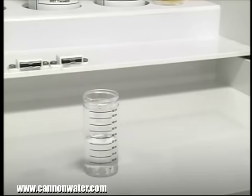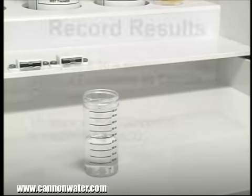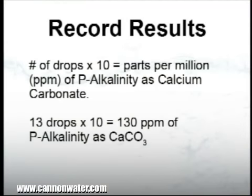According to the endpoint ID procedure, the titration is complete when the sample changes from pink to colorless. In this example, each drop was equivalent to 10 parts per million of alkalinity. The sample took 13 drops to reach the endpoint. Therefore, the p-alkalinity of our sample is 130 parts per million as calcium carbonate. Write down this result and continue with the test.